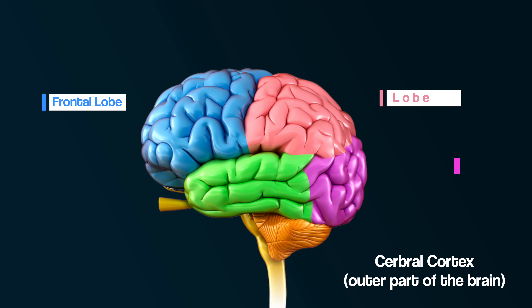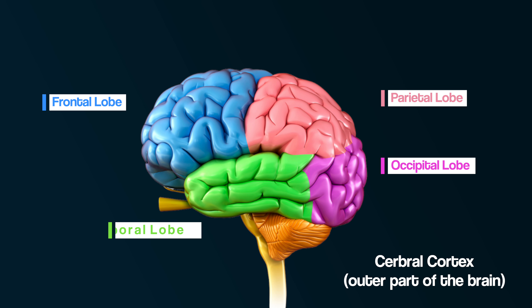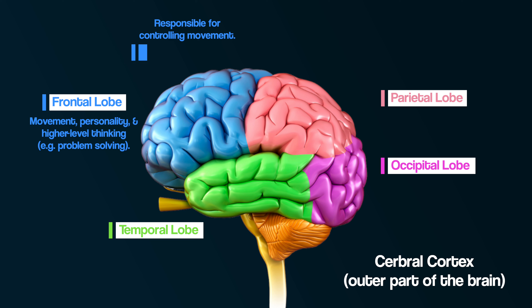The four lobes are: the frontal lobe, the parietal lobe, the occipital lobe, and the temporal lobe. The frontal lobe is thought to be responsible for movement of the body, personality, and higher level thinking, such as concentration, planning and problem solving. The motor area of the brain — motor meaning movement — is located at the back of the frontal lobe.